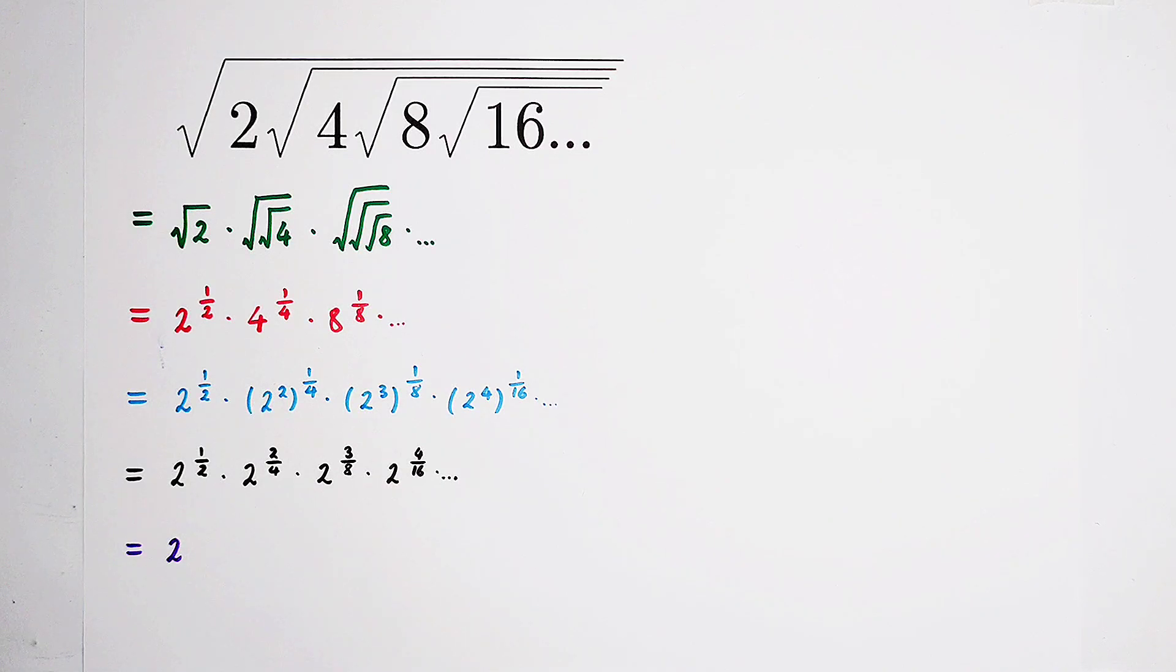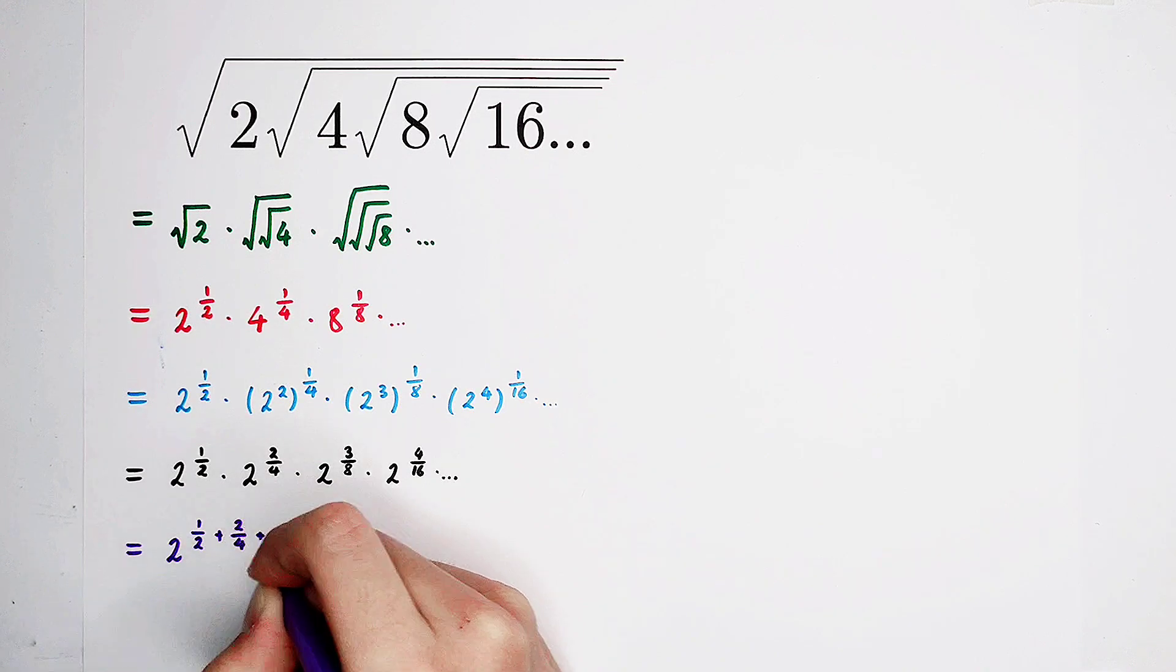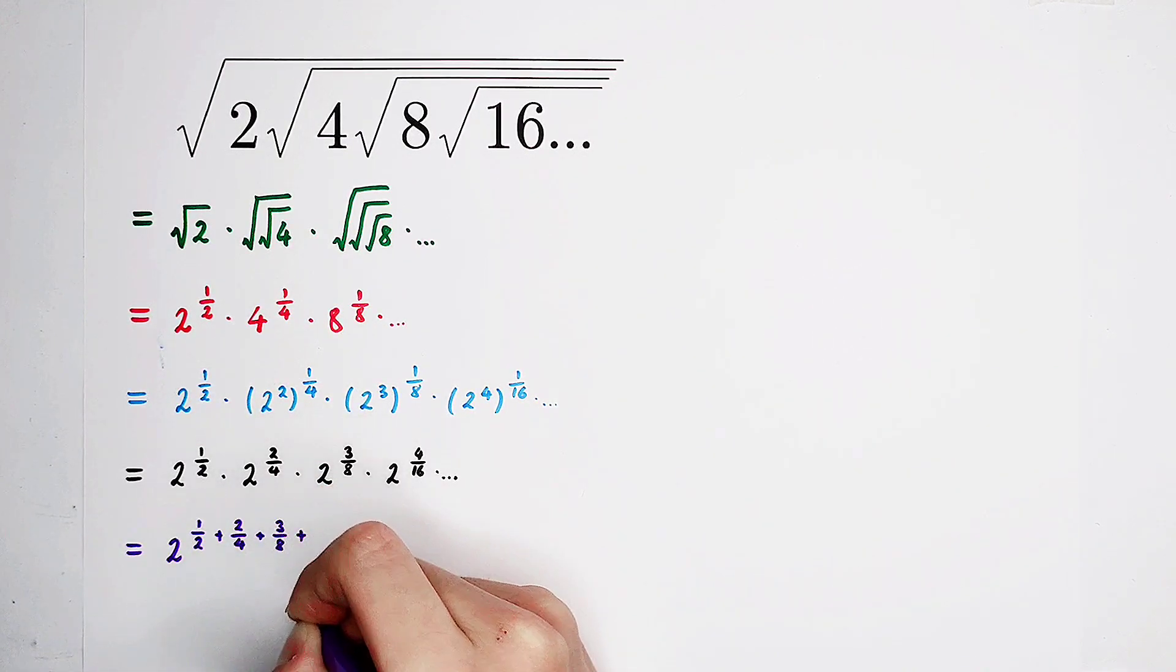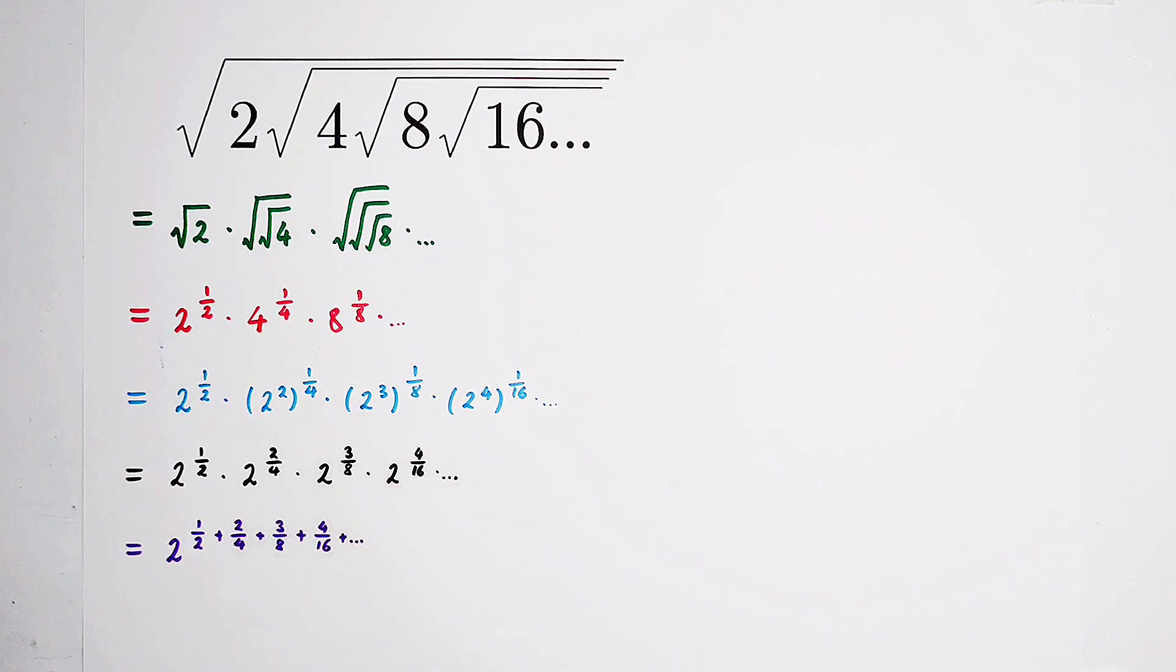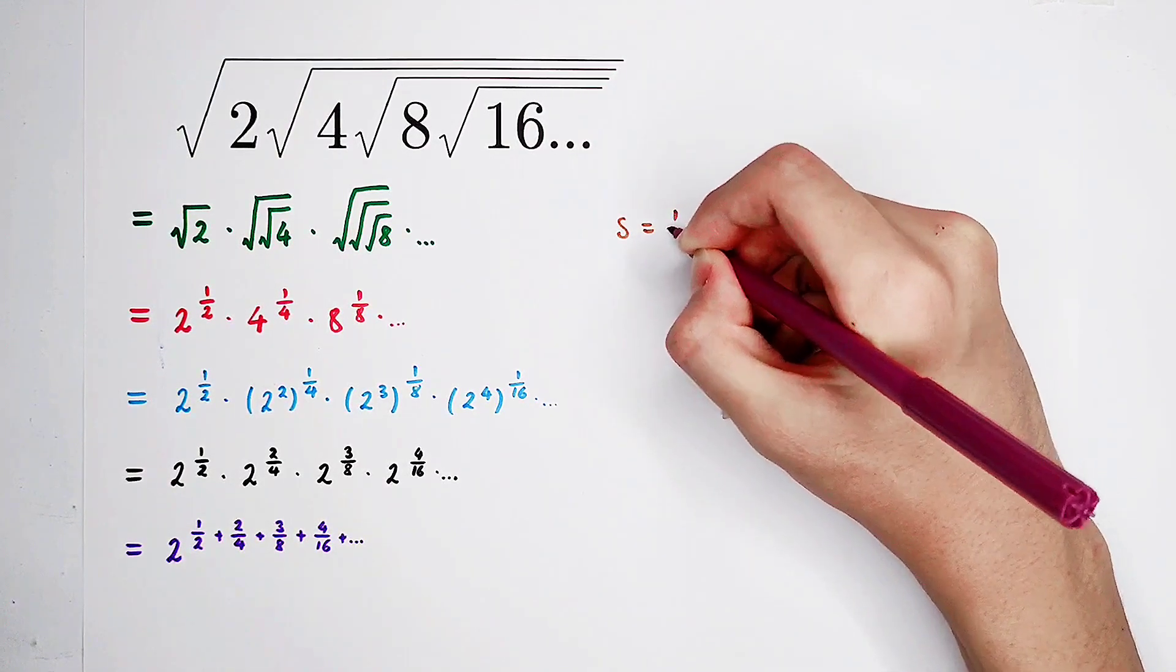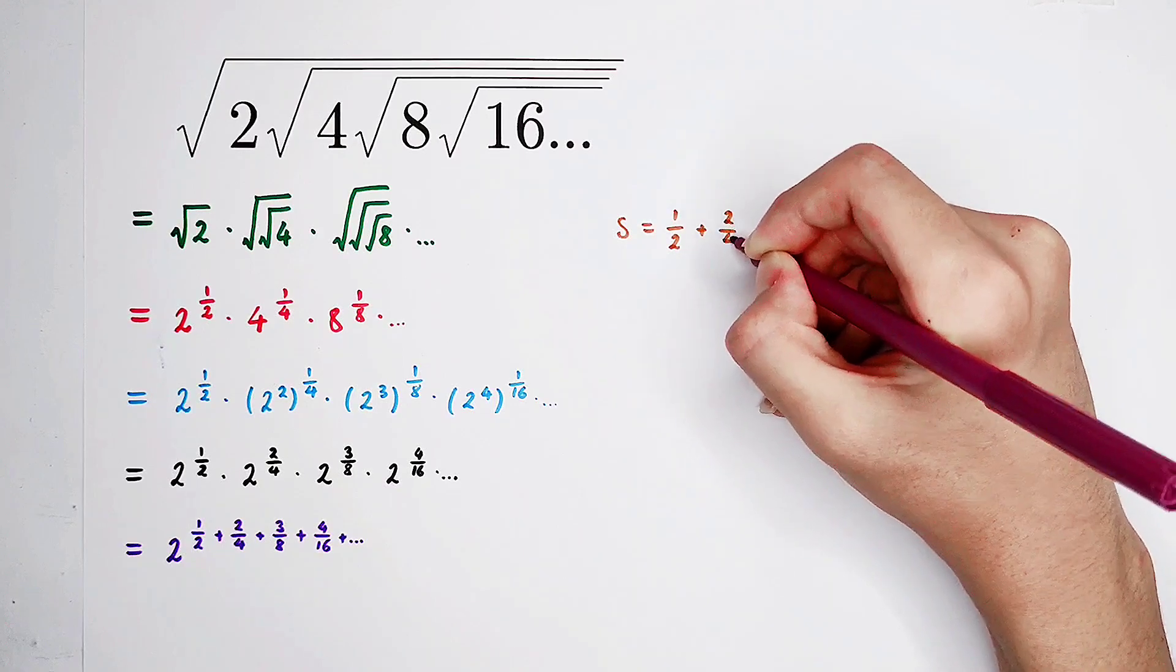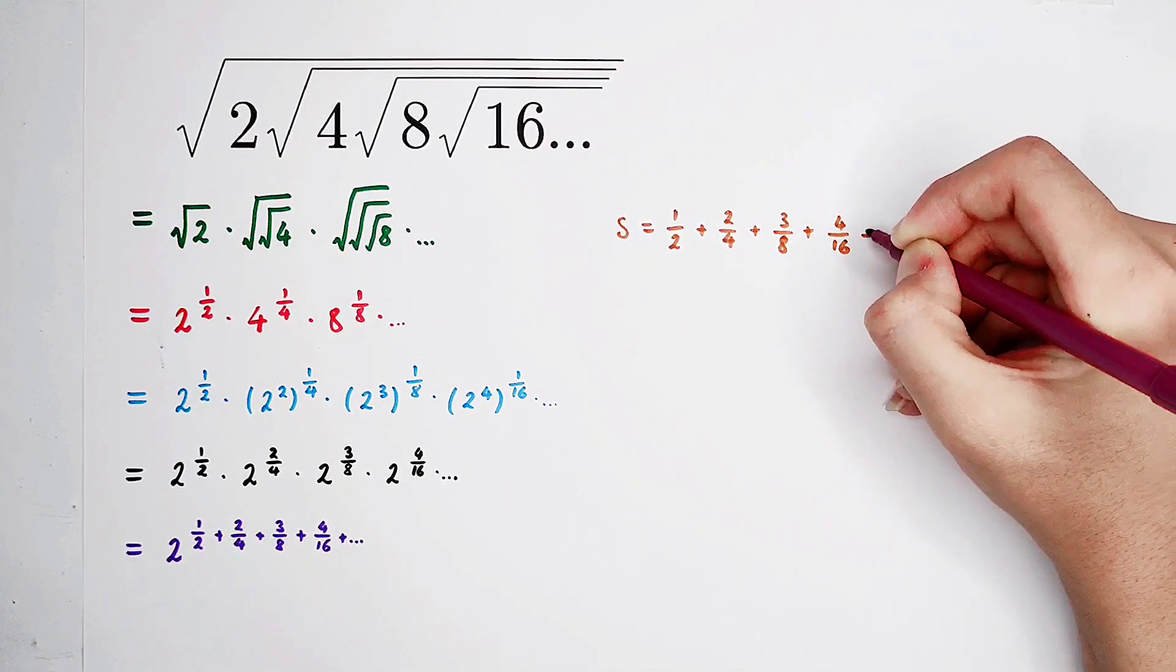Our last step is, they have the same basis, 2, so we take 2 from the new base, and the new exponent will be the sum of all the exponents. 1 over 2, plus 2 over 4, plus 3 over 8, plus 4 over 16, plus so on. So now, our job is to evaluate the exponent. Now if we suppose that s is the exponent, 1 over 2, plus 2 over 4, plus 3 over 8, plus 4 over 16, plus so on.